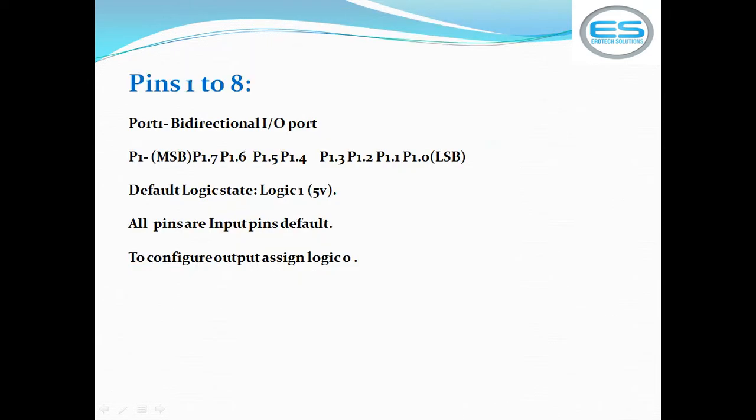Now coming to the explanation of individual pins. Pins 1 to 8 are dedicated for port 1. Port 1 is bi-directional input-output port. You can connect both input devices and output devices for this IO port. P1.0 is LSB and P1.7 is your MSB bit of port 1. And all IO pin's default state is high, which means if you check with multimeter, it will give 5V supply. All pins act as input pins as default. If you are looking to use as output pins, you need to configure it as 0 in beginning of the program.